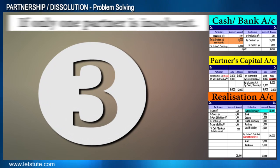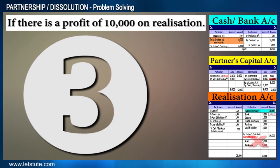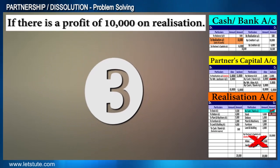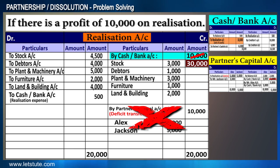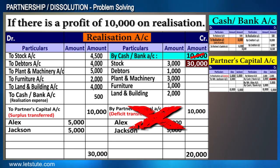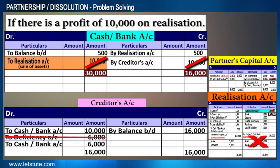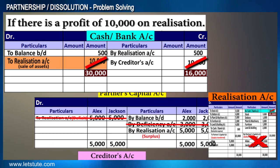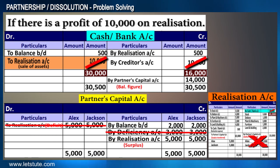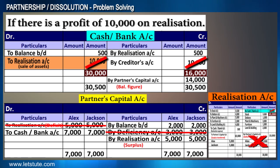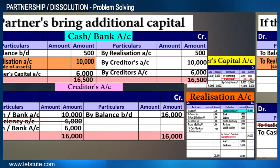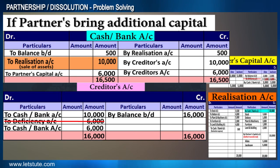The last twist: instead of a loss, say there is a profit of 10,000 on realization. In this case, the profit on realization would be transferred to the partners' capital account on the credit side, and creditors would be paid from the cash available. The partners will also receive their capital back along with an additional surplus of 5000, and all accounts will be settled.